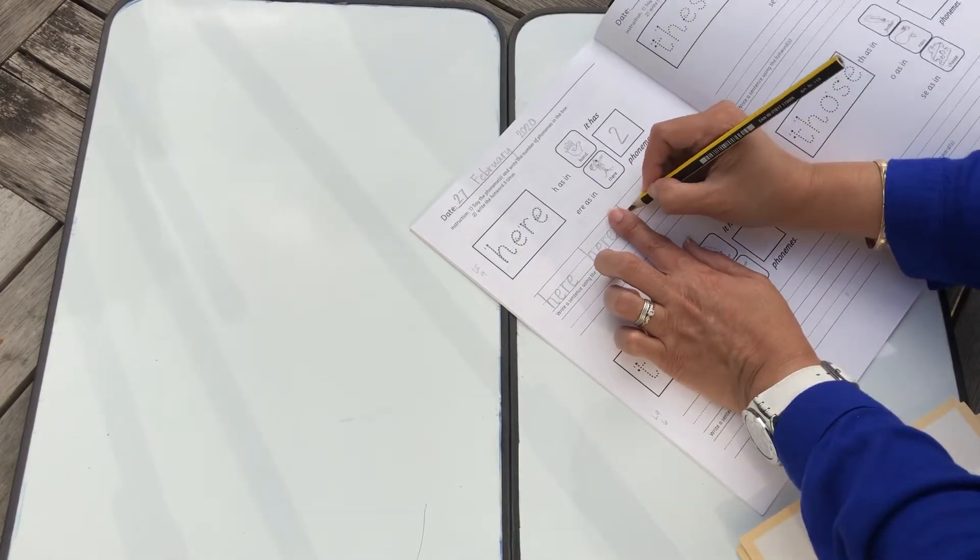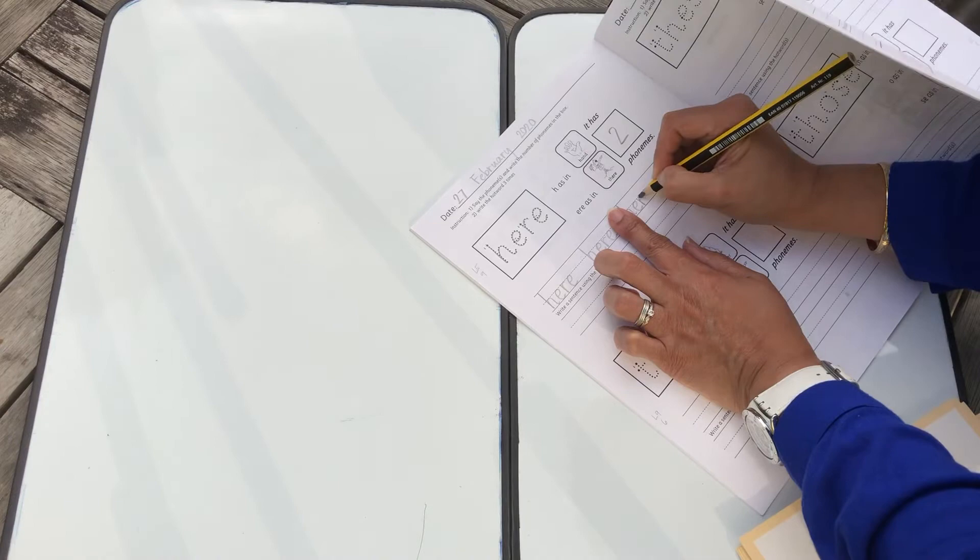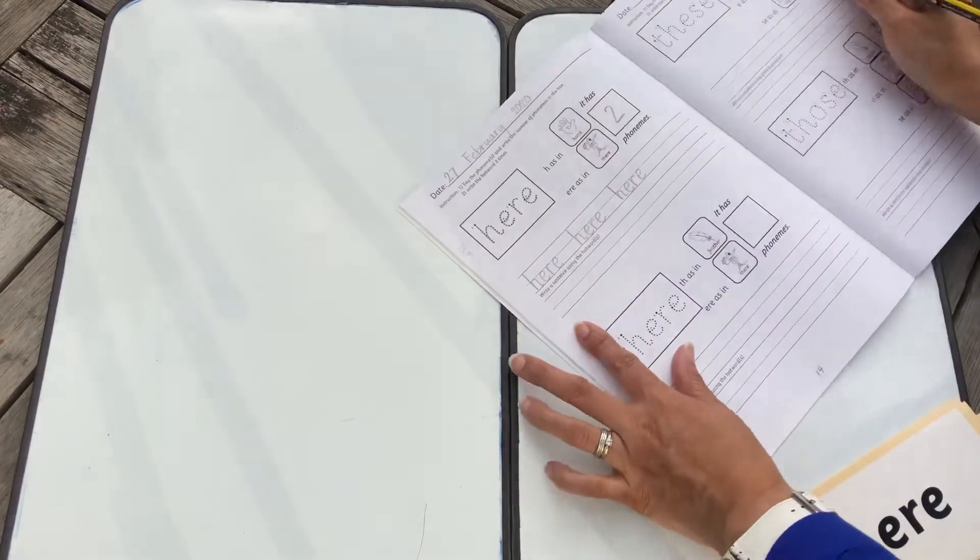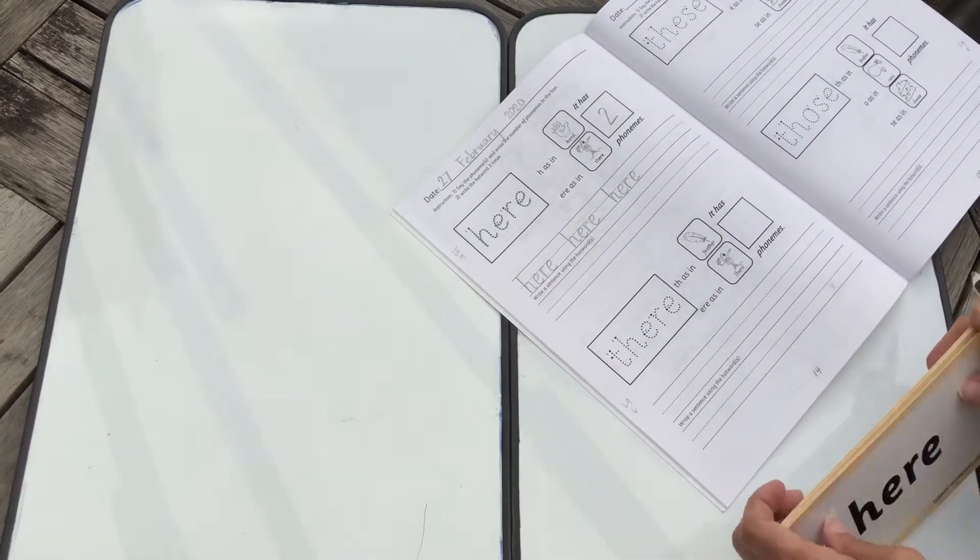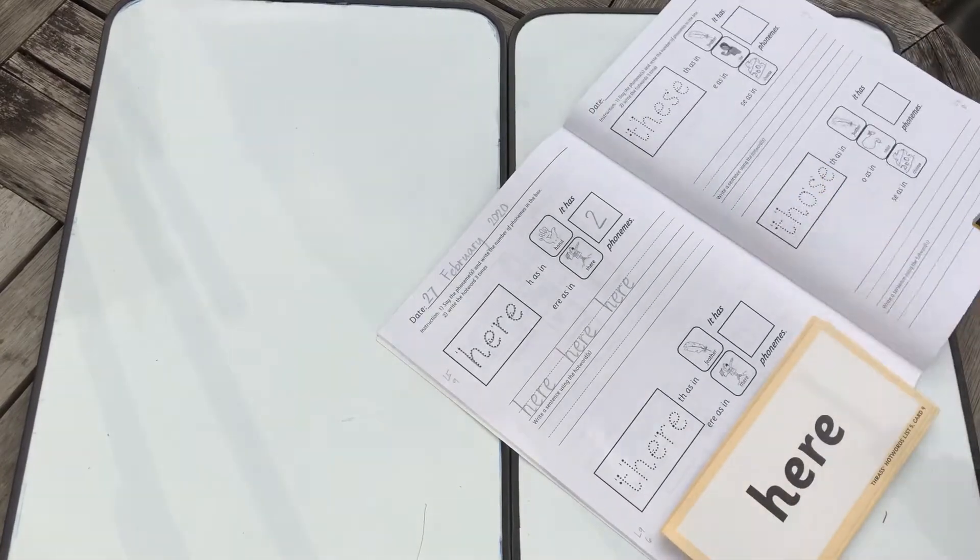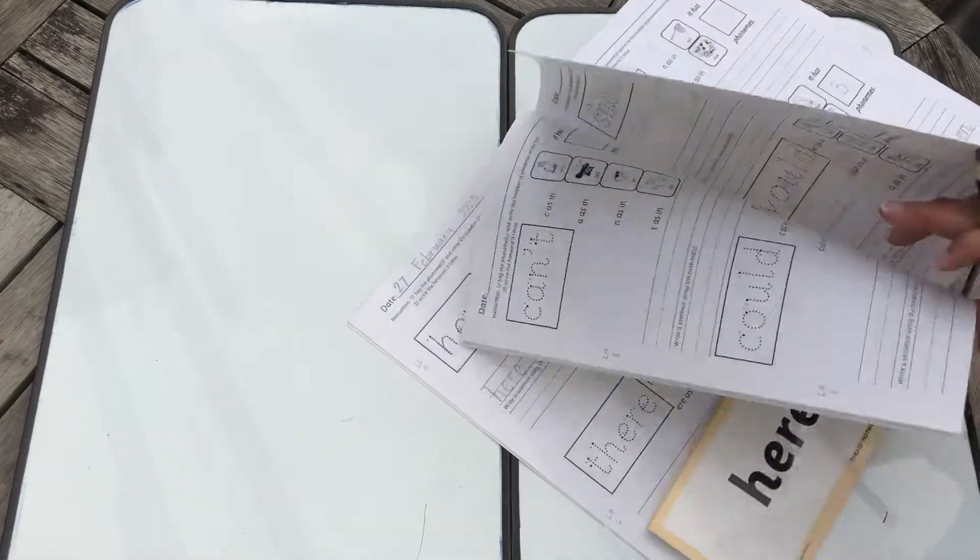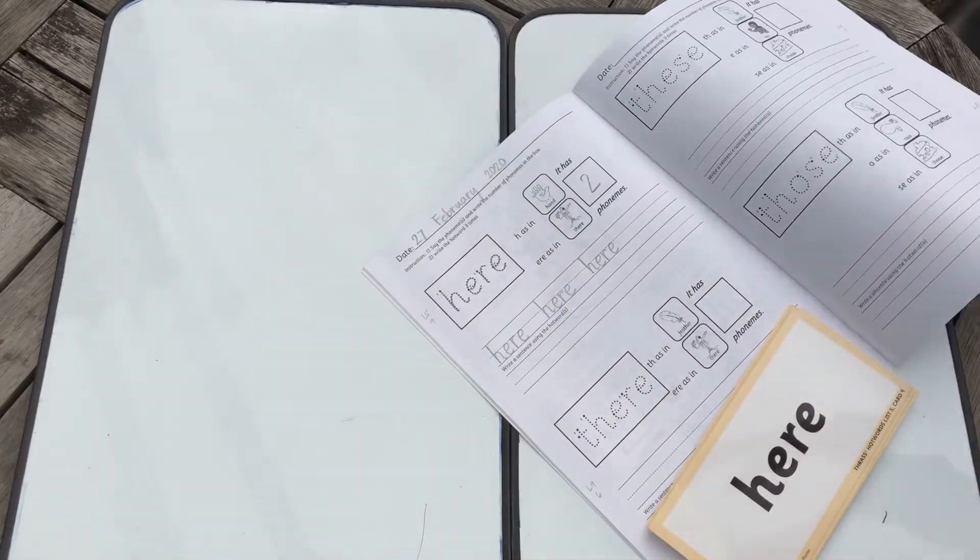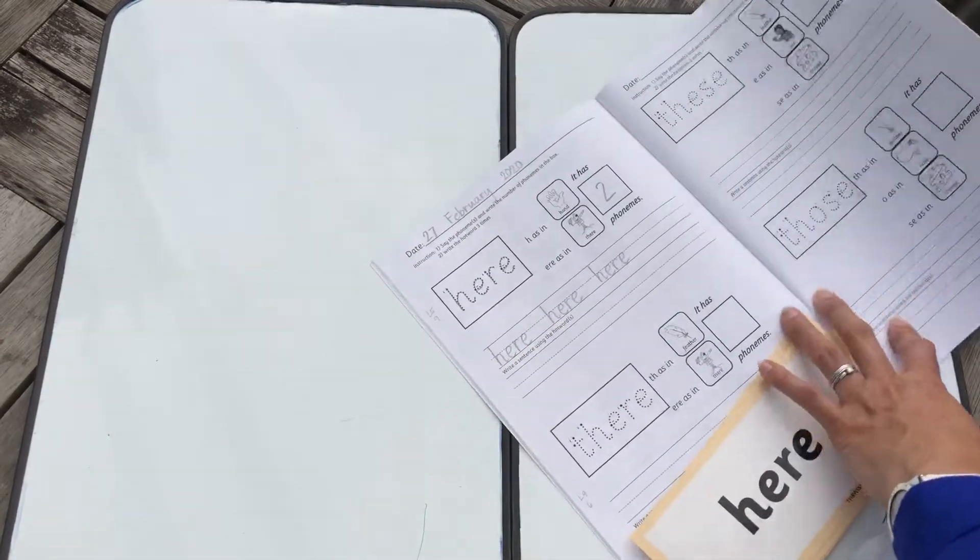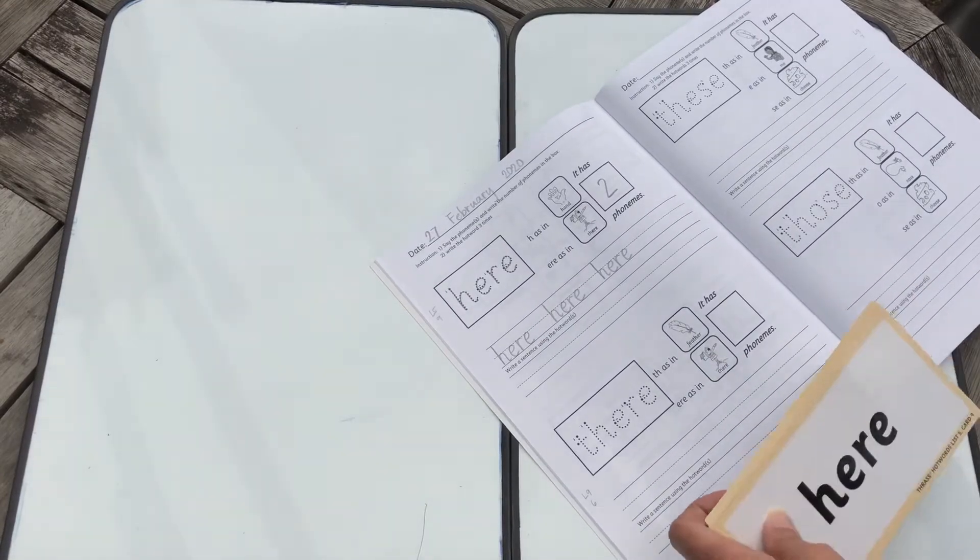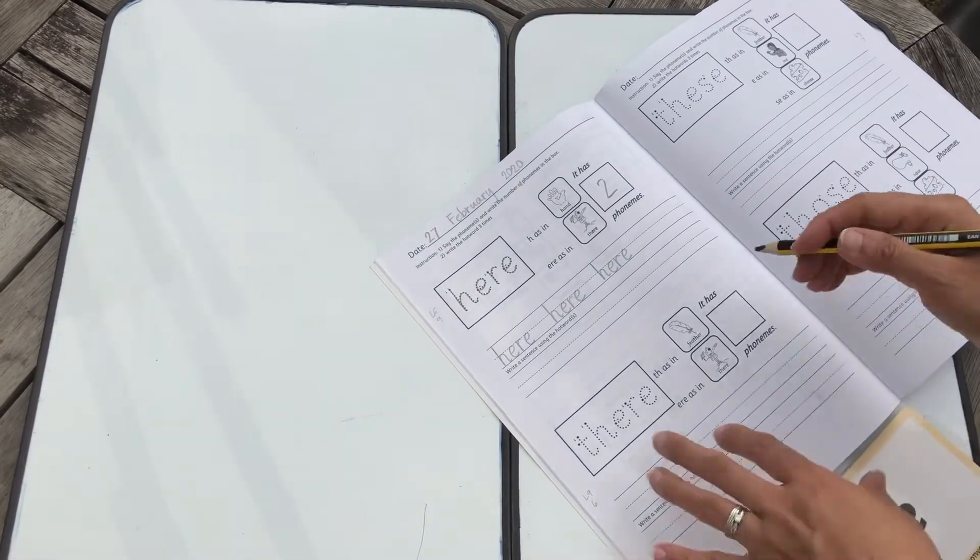And write the sentence. I like to play here, or my home is here, the garden is here, my toy is here, my ball is here. Okay.